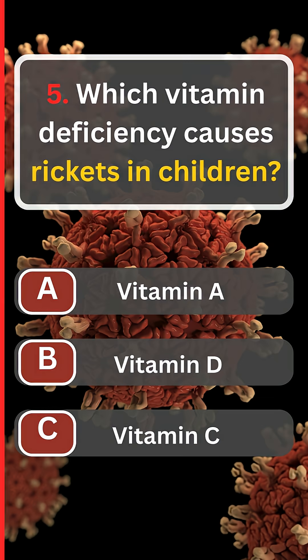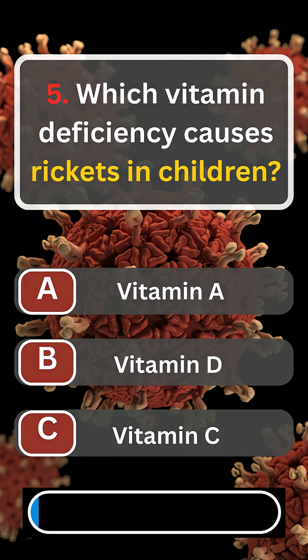Question number five. Which vitamin deficiency causes rickets in children? A. Vitamin A. B. Vitamin D. C. Vitamin C.